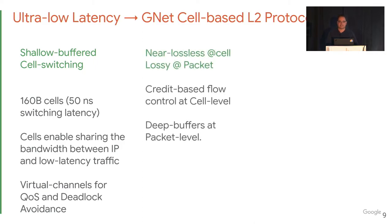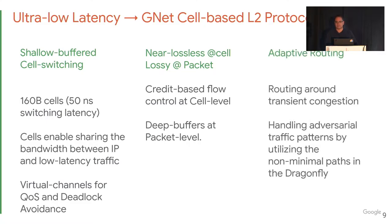Second, it's near-lossless at the cell level. By using credit-based flow control at the link level, we are almost lossless at the cell level. However, we allow packets to get dropped at the periphery of the GNET network while using deep buffers. Lastly, we use adaptive routing in hardware to use non-minimal paths in the Dragonfly network, achieving high bandwidth at worst-case traffic patterns as well as routing around transient congestion.